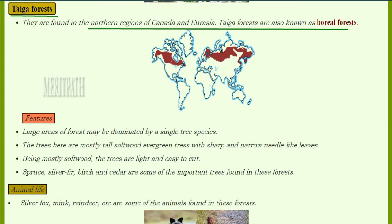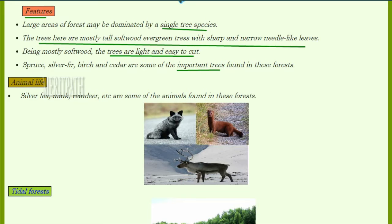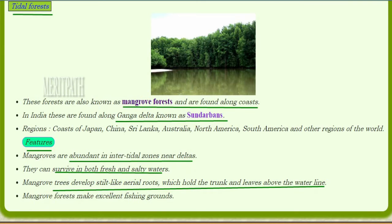Taiga forests, also known as boreal forests, are found in the northern regions of Canada and Eurasia. Large areas are dominated by a single tree species. These trees are mostly softwood evergreen trees with sharp, narrow needle-like leaves. Being softwood, the trees are easy to cut and very light. Trees found here include spruce, silver fir, birch, and cedar. Animals found here include silver fox and mink.